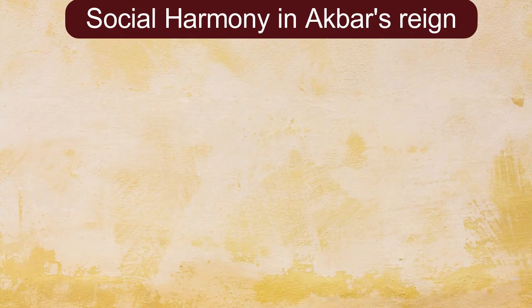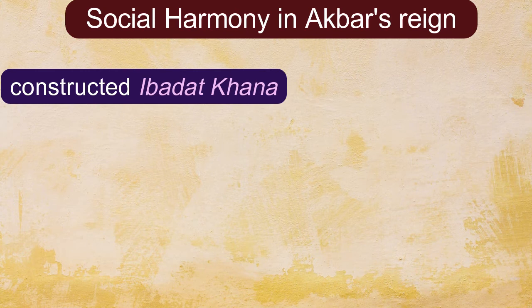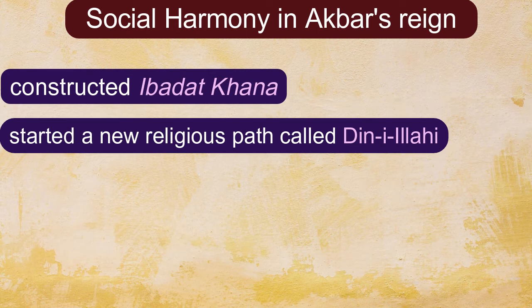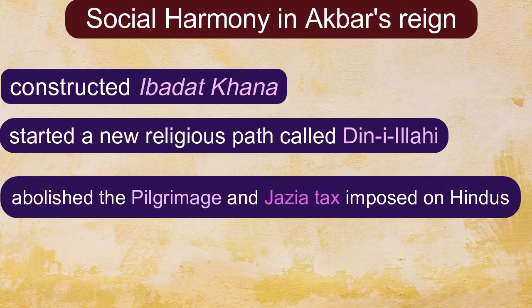Let us talk about social harmony in Akbar's reign. He constructed the Ibadat Khana in Fatehpur Sikri, which is a fine example of his religious tolerance. He started a new religious path called Deen-e-Ilahi, which included the teachings of different religions. Akbar also abolished the pilgrimage tax and the Jaziya tax imposed on Hindus.